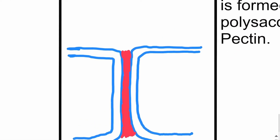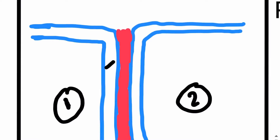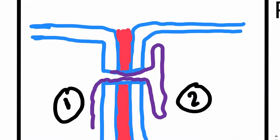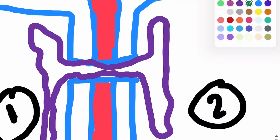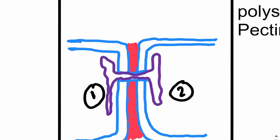For example, here we can see two plant cells — cell number one and cell number two. The blue structures are the cell walls of these plant cells. There will be a hole in the cell wall, and through this hole a strand of cytoplasm will run, which is known as the plasmodesma. There are a lot of plasmodesmata between neighboring plant cells.